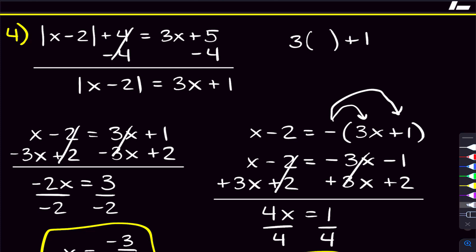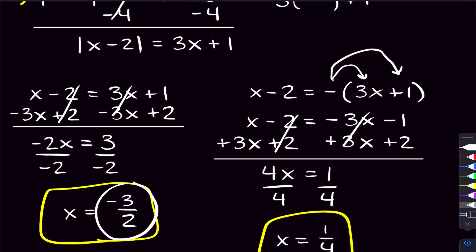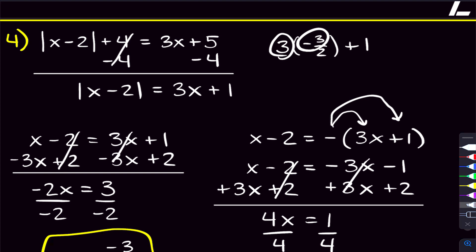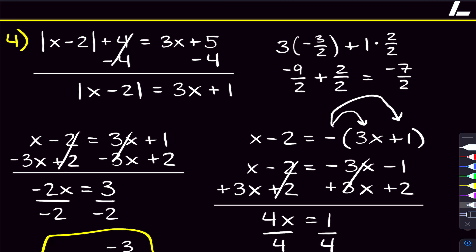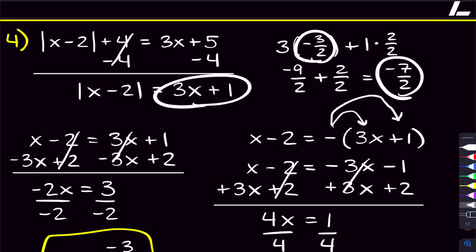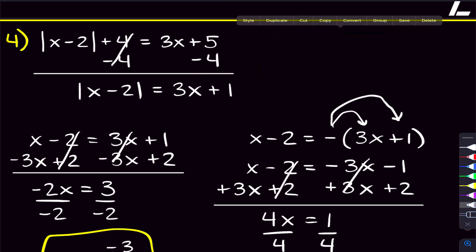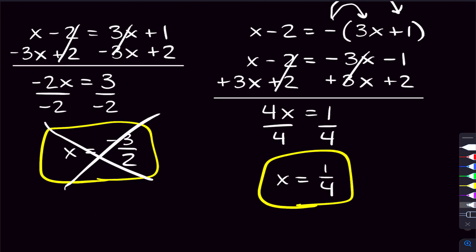But for x equals negative 3 halves: 3 times negative 3 halves is negative 9 over 2, plus 1 expressed as 2 halves gives negative 7 over 2. That's a negative number, and the absolute value of something can't be negative. So negative 3 halves is a false solution and we cross it out. One fourth is our only answer.